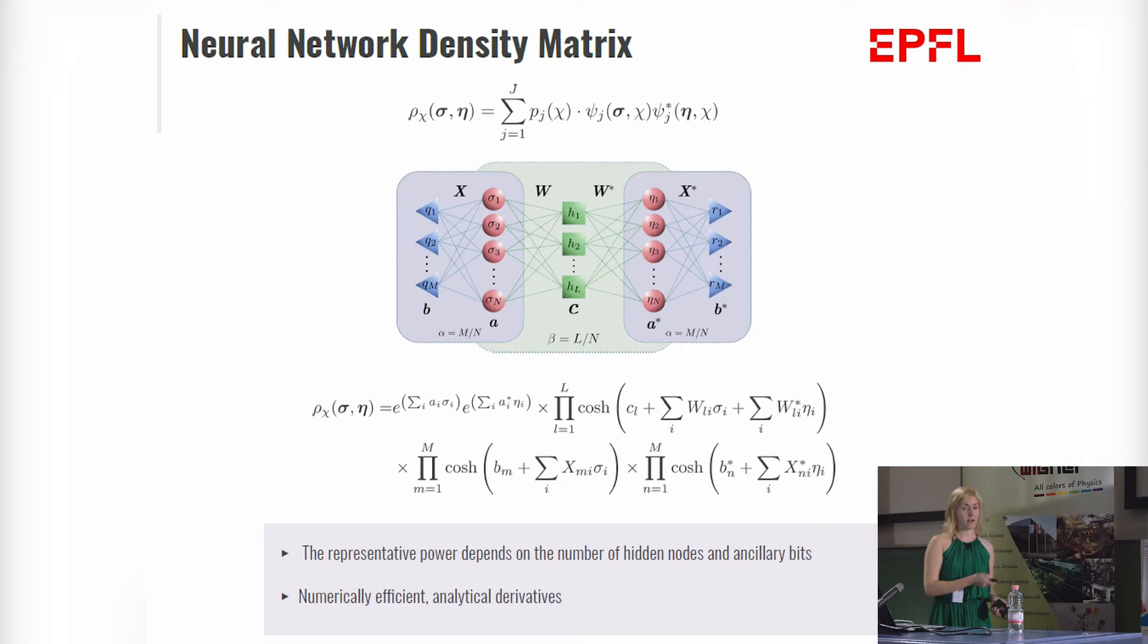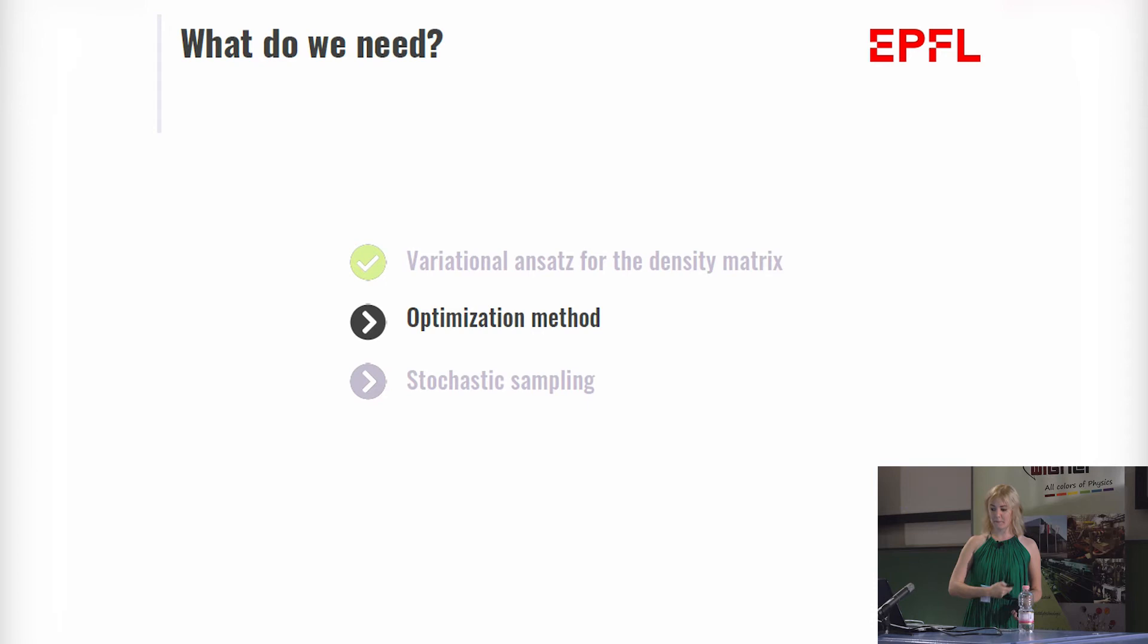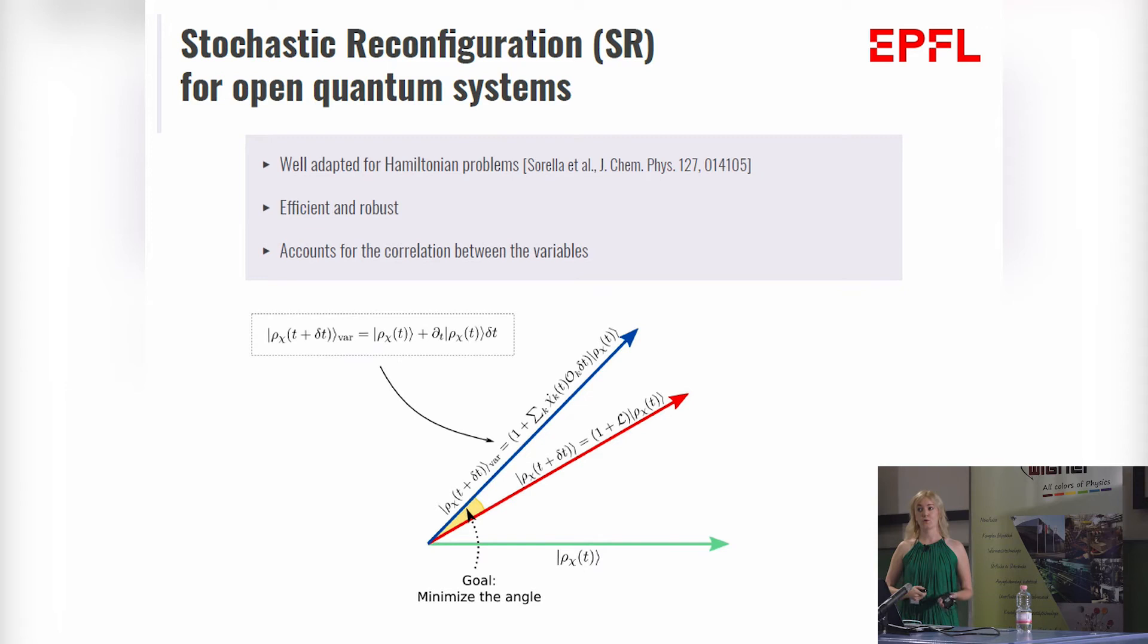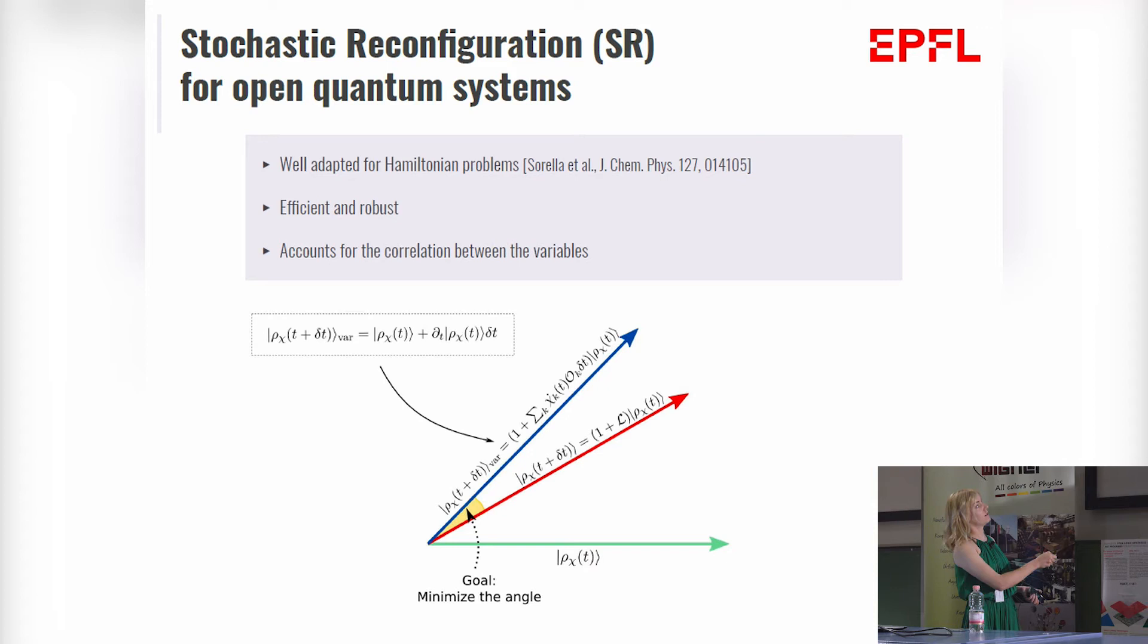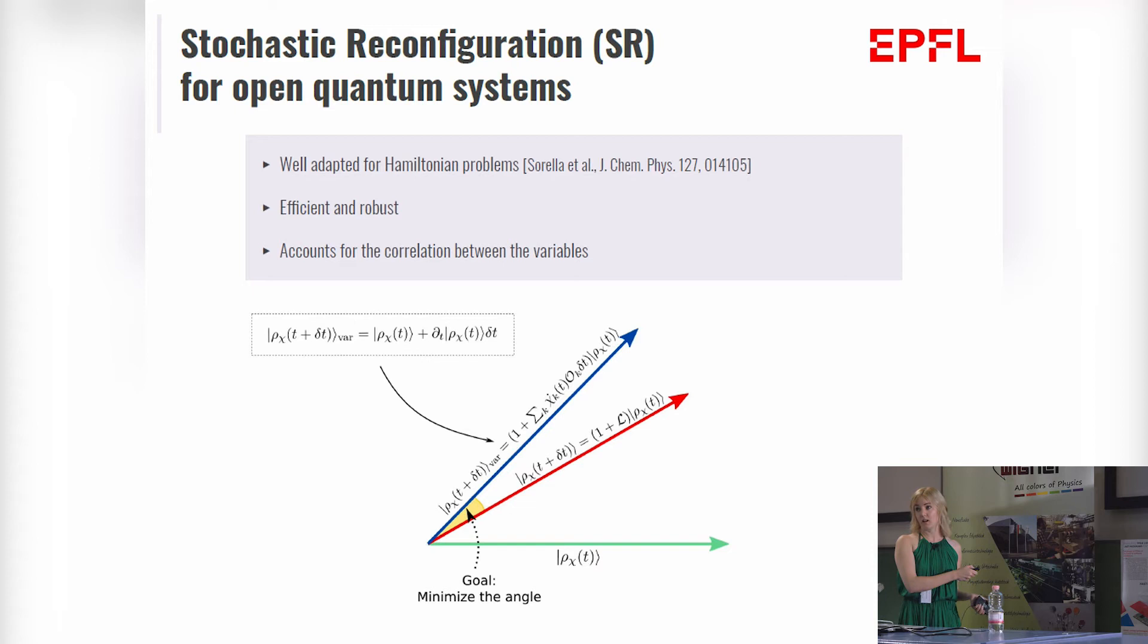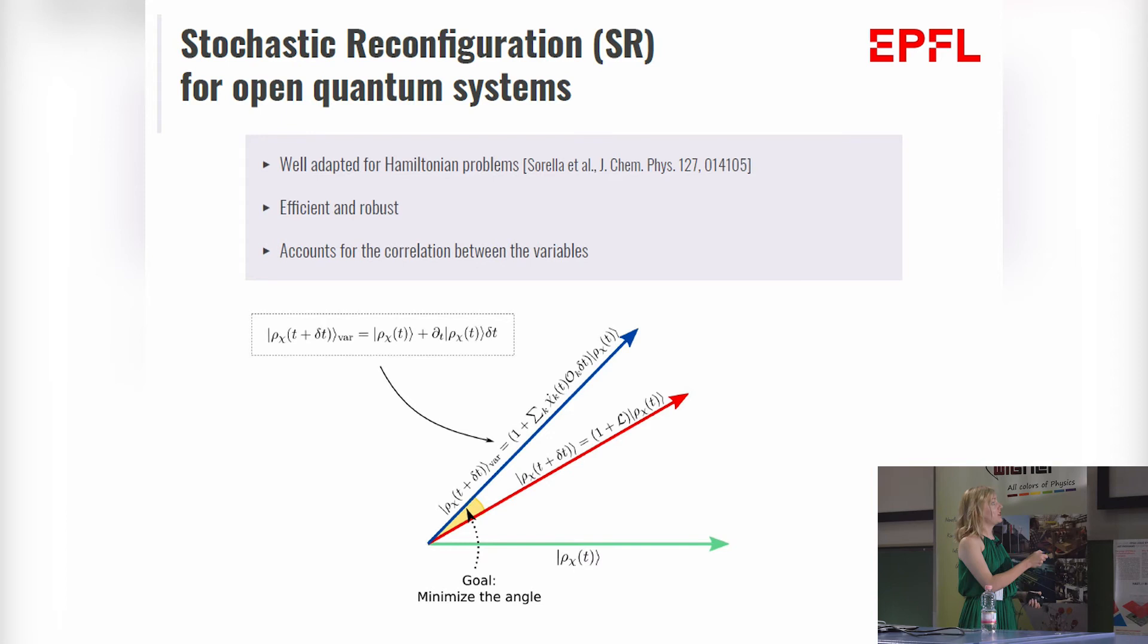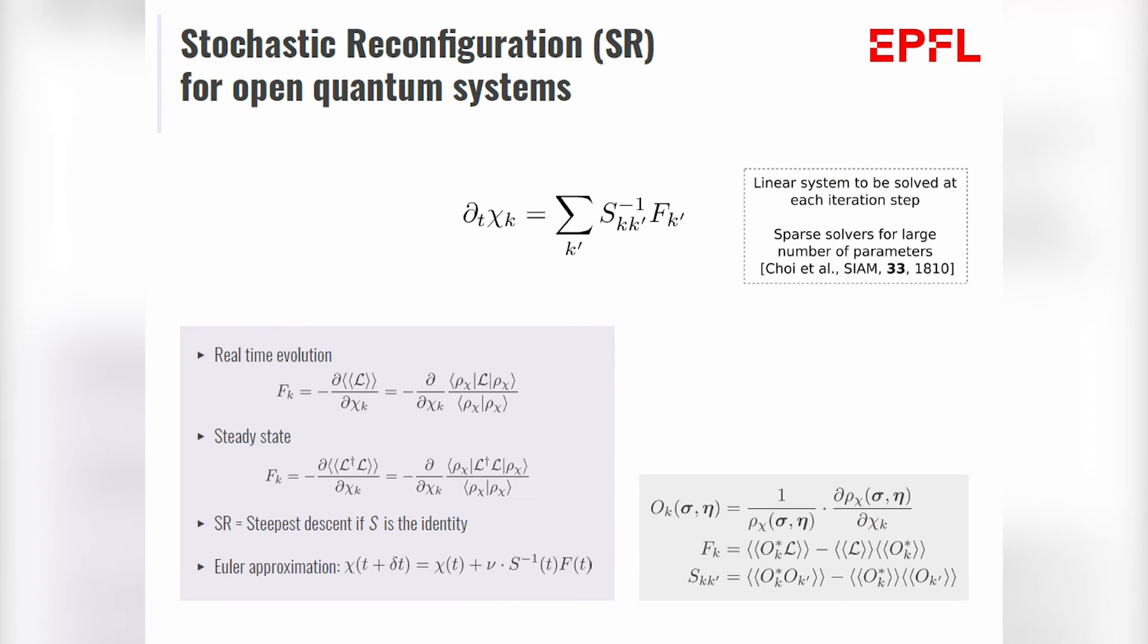So how do we optimize this? We chose to rewrite the stochastic reconfiguration method for open quantum systems. What's the idea? At time t, we have a density matrix. Ideally, we want to follow the exact time evolution which is dictated by the Lindbladian. In practice, we are only able to change the variational parameters. This is just a linear expansion if we change the variational parameters. So what do we want to do? We want to minimize this angle. We want to achieve that when we change the variational parameters, the change density matrix corresponds to the real-time evolution. And once we do that, we get to a system of linear equations which has to be solved at each iteration step, giving us the real-time evolution of the parameters.